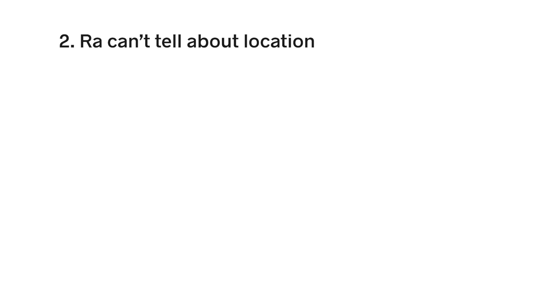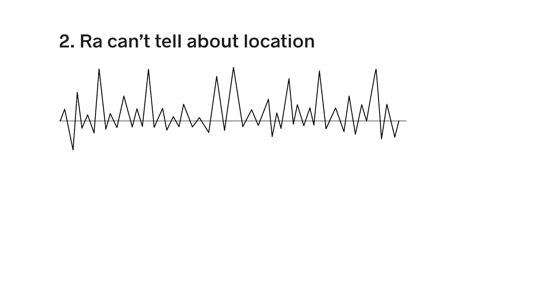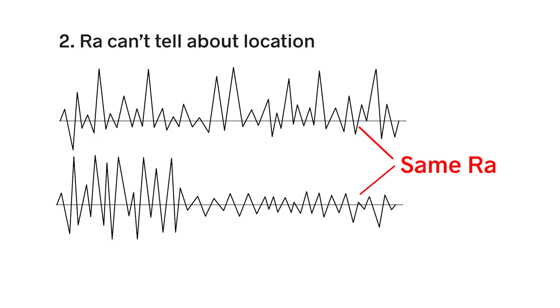Second, average roughness can't tell where features are on the surface. A surface with randomly scattered peaks will have the same RA as a surface with those peaks clustered in one place, and that could lead to scratching, gouging, premature wear, etc.